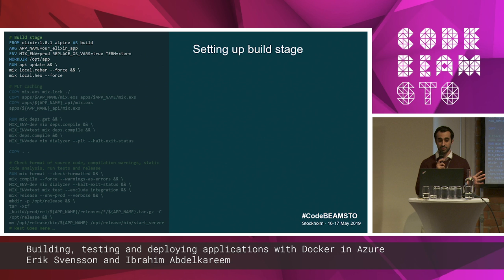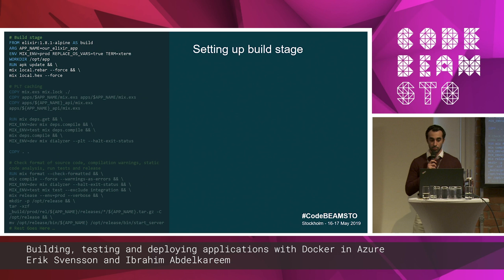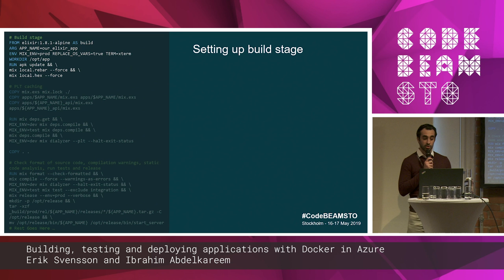We start with `FROM elixir:alpine` — an official image based on Alpine that contains all the build tools we need. We set some build arguments and environment variables using `ARG` and `ENV`, and then install some build tools we need like Hex and Rebar.